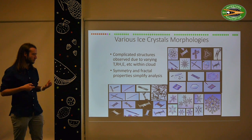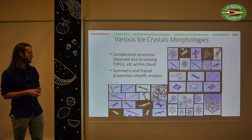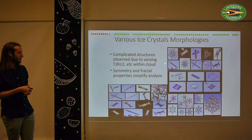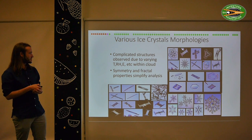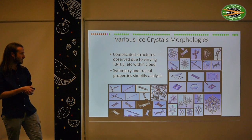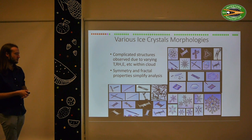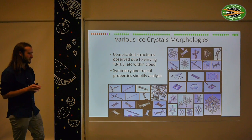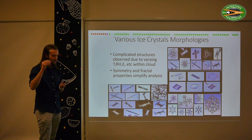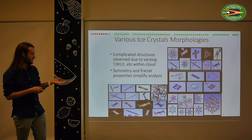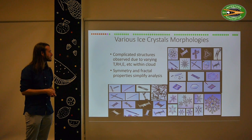These are all real ice crystals, highlighting the natural complexity we have to measure with our instruments — plate-type ice crystals through to stellar dendrites and column particles, all essentially coming from water in the atmosphere but manifesting in very different ways.